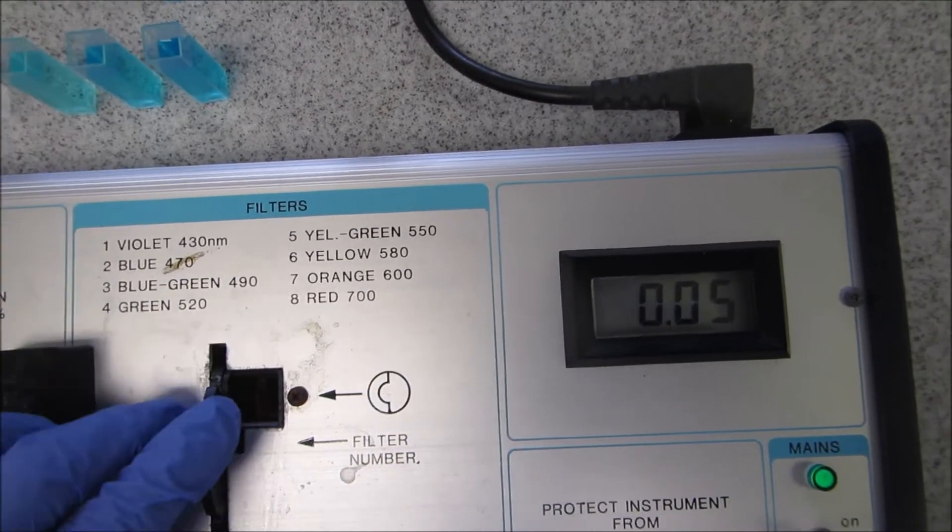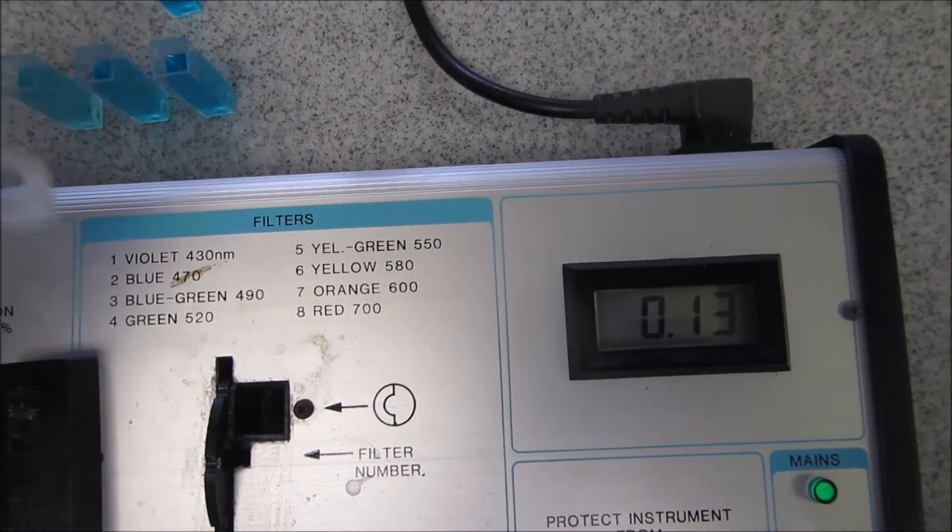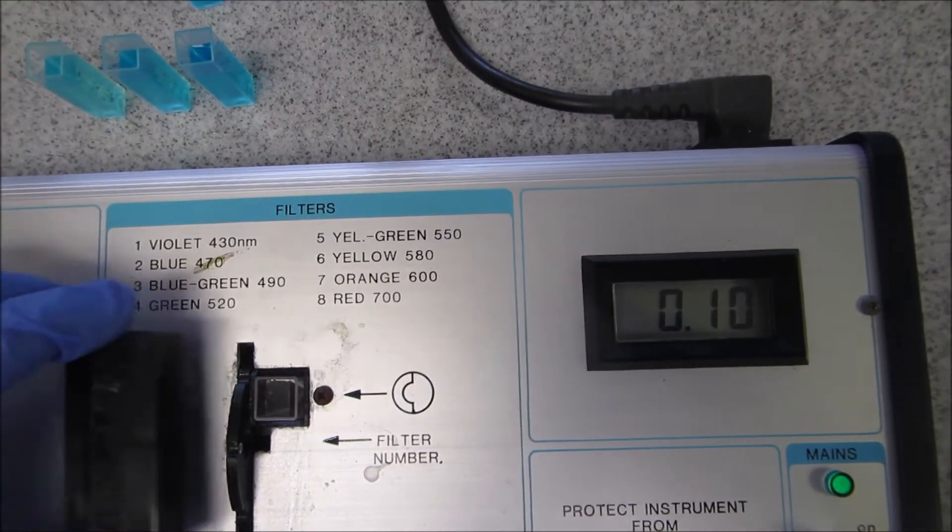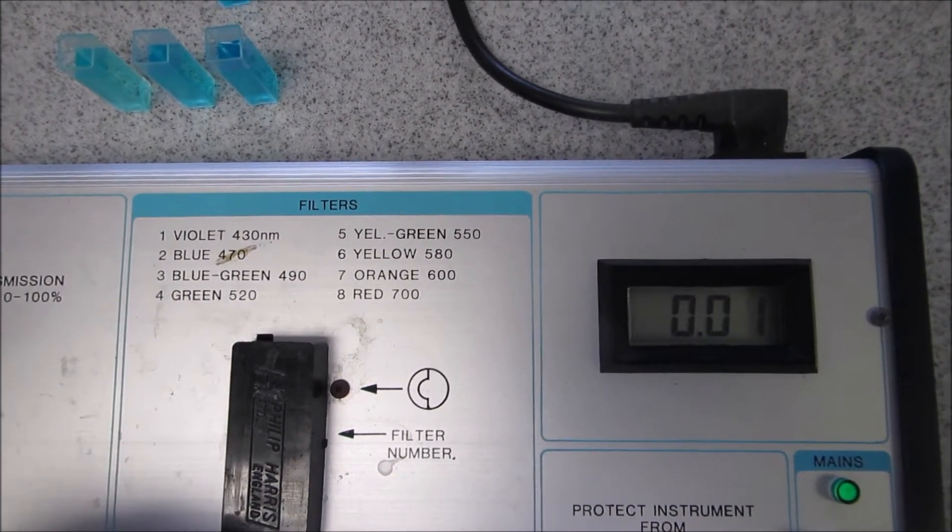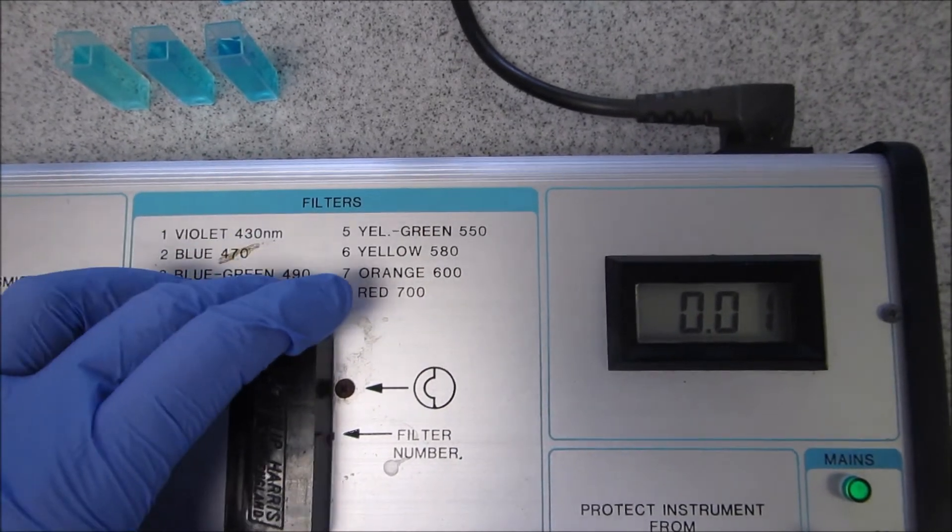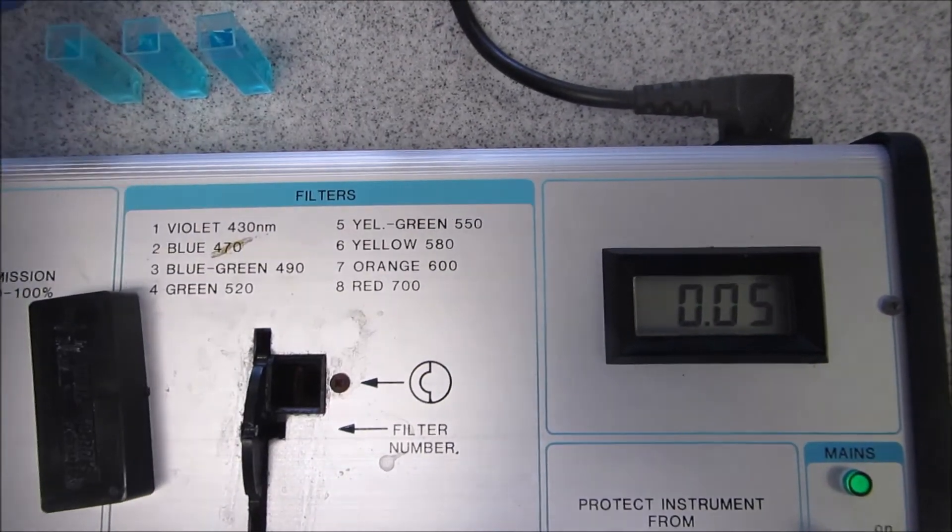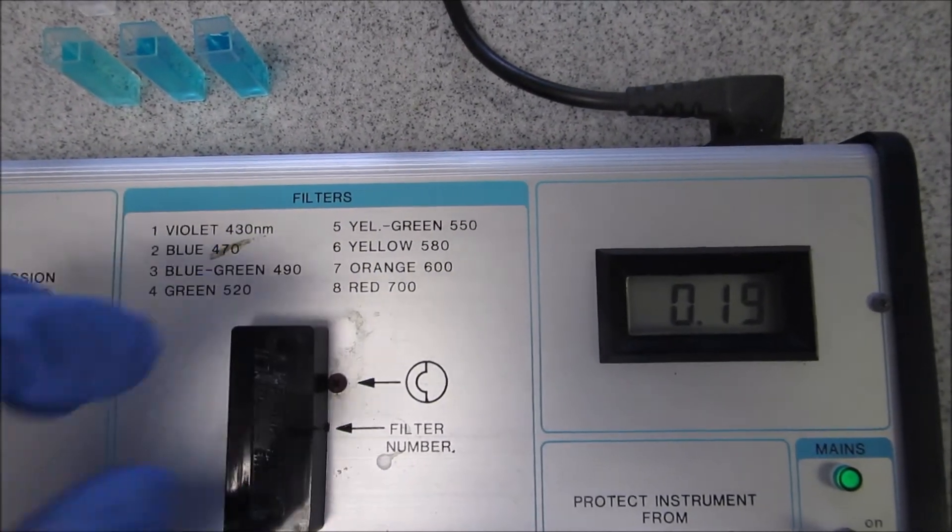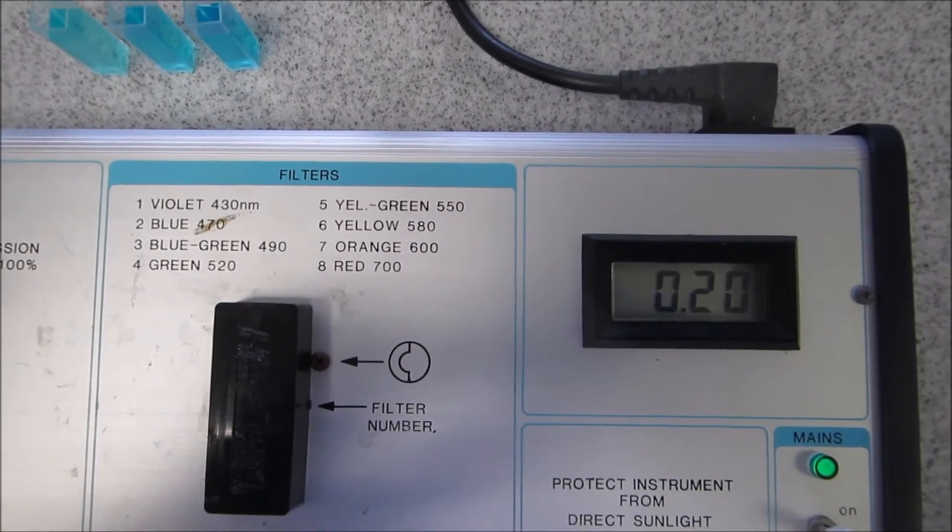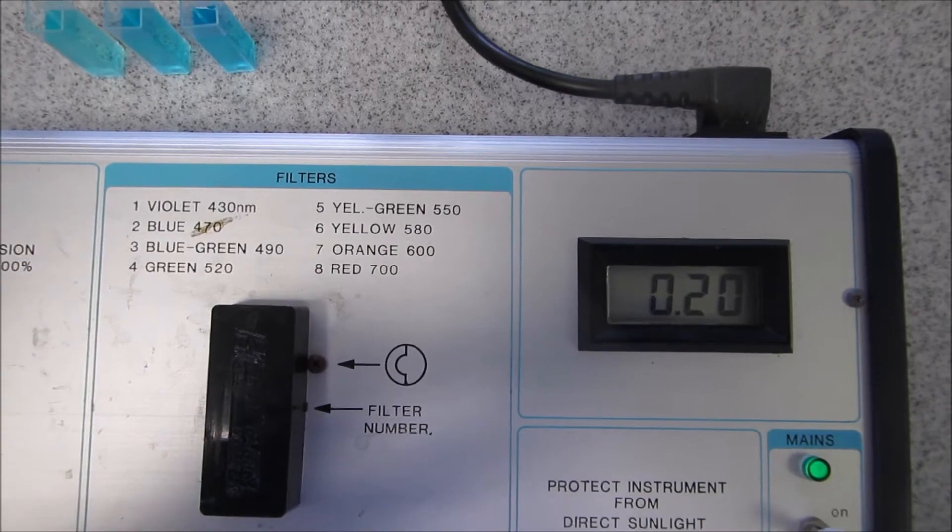I'm now going to change it to number 5 which is 550 nanometers, put in my blank, zero it, and now put back in my 1 molar solution. You can see the reading for that.